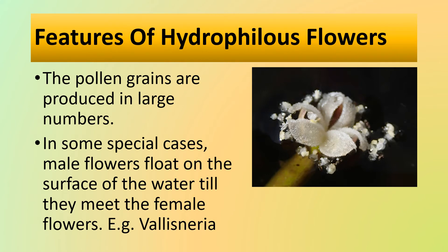Now let's look at the features of hydrophilous flowers. The pollen grains are produced in large numbers. In some plants, the pollen grains have a specific gravity almost equal to that of water, so they remain floating below the surface of water. In some special cases, the male flowers float on the surface of the water until they meet the female flowers.